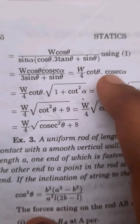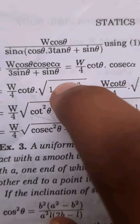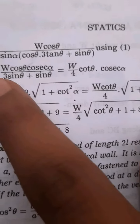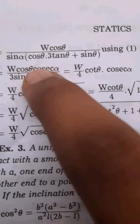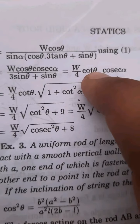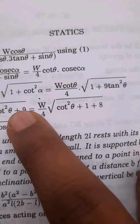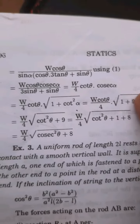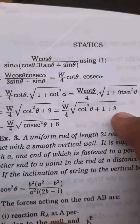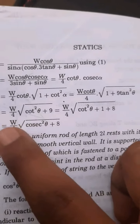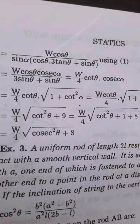So R = W/4 · cot θ · cosec α. But cosec α = √(1 + cot² α) and cot α = 3 tan θ, so cot² α = 9 tan² θ. Therefore cosec² α = 1 + 9 tan² θ. Simplifying cot² θ gives cot² θ + 9 = cosec² θ + 8. Therefore R = W/4 · √(cosec² θ + 8), which proves the result.